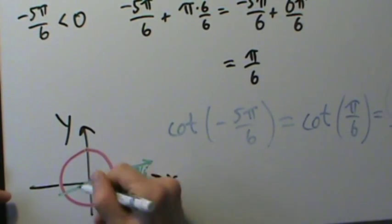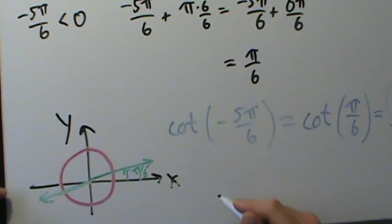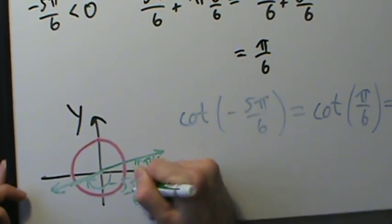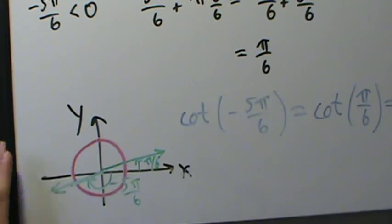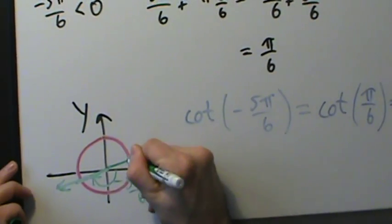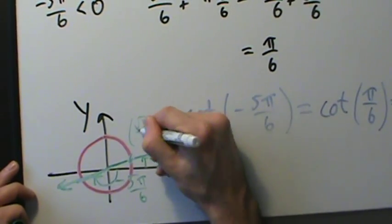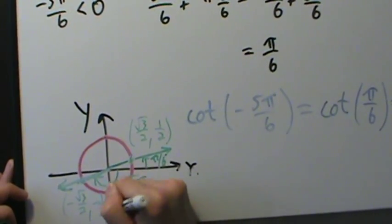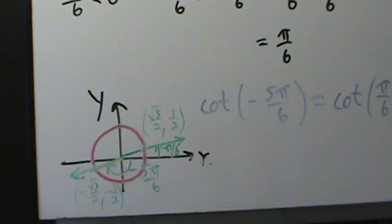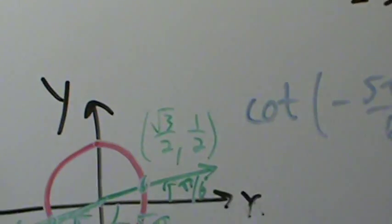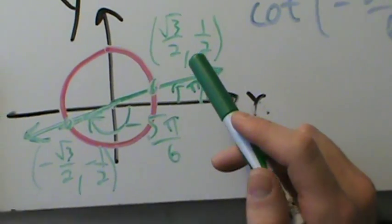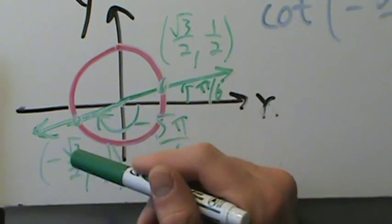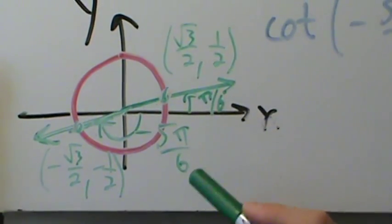Notice that negative 5π over 6 is in a straight line with π over 6. These angles are not coterminal, so they don't hit the unit circle at the same point. The point at π over 6 is (√3/2, 1/2), and the point at negative 5π over 6 is (−√3/2, −1/2). For cotangent, x divided by y: both negatives cancel, giving (√3/2)/(1/2) = √3 in both cases.